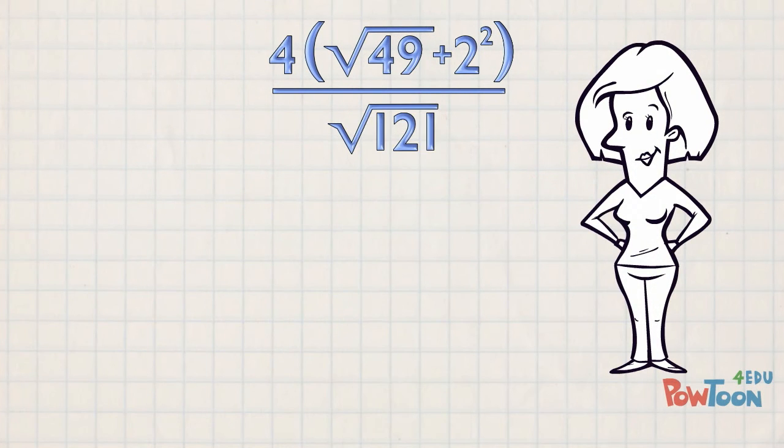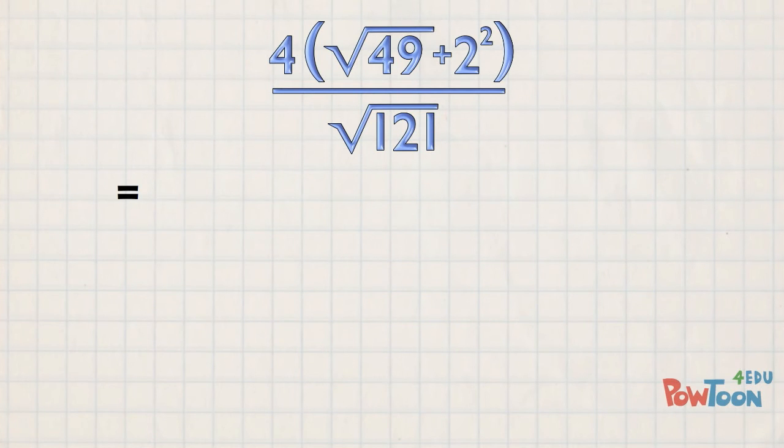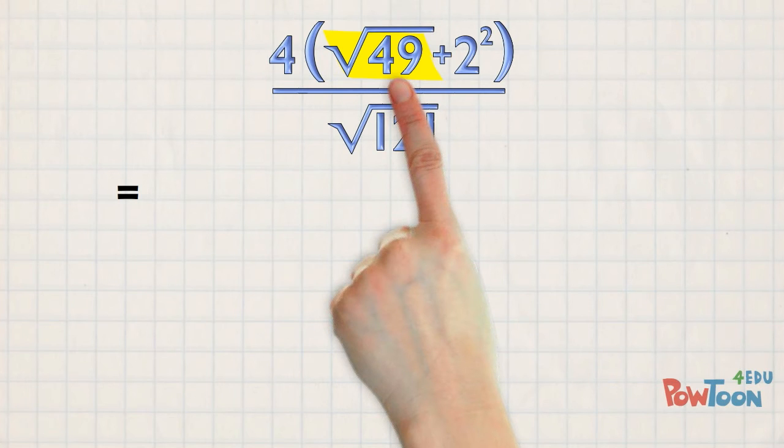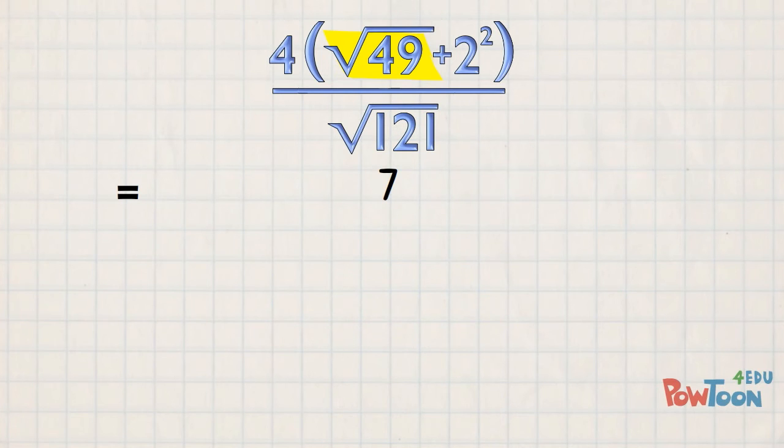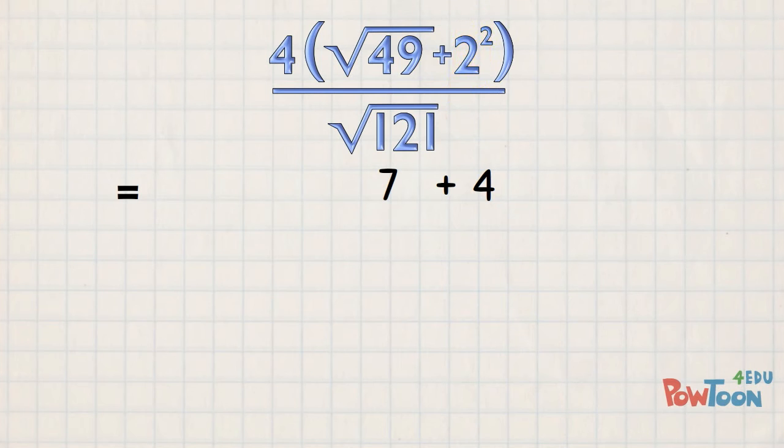We have two lines of math. We simplify both lines of math then do the division at the end. I'll start up top. Brackets first. The square root of 49? 7 times 7 is 49, the square root is 7. Plus 2 squared - 2 times 2 is 4. Complete the terms!